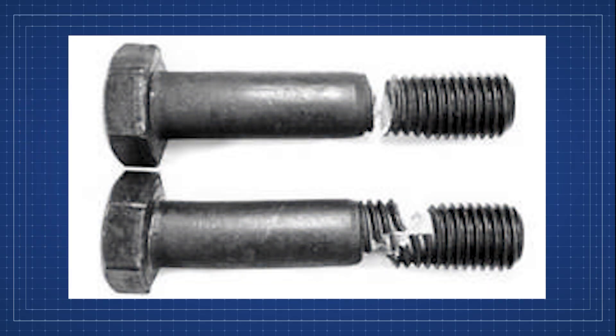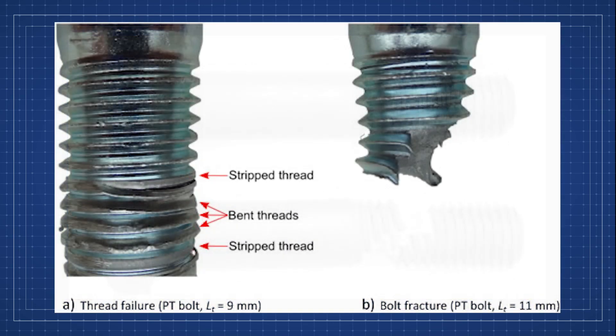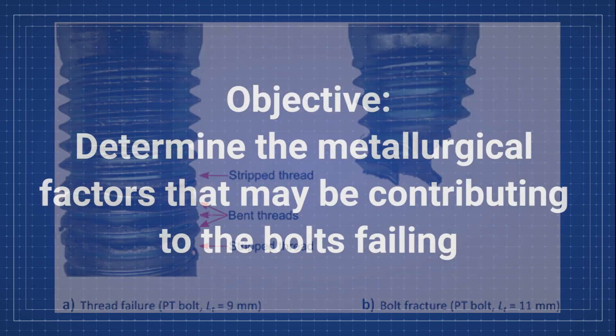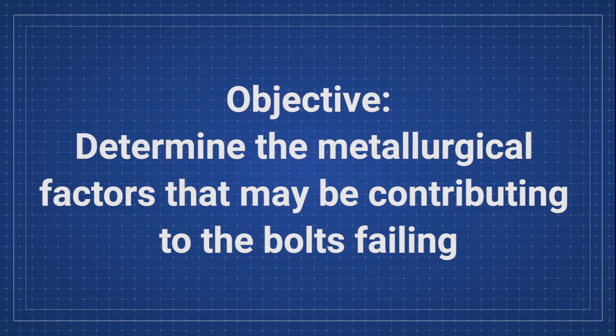Your company is having problems with a batch of bolts stripping as they are tightened to specific torque levels. You are given samples of the bolts as well as examples from prior batches that perform adequately. Your objective is to determine the metallurgical factors that may be contributing to this change in performance.